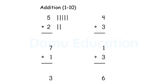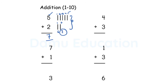For five plus two, you draw lines to represent each number. For five, draw five lines: one, two, three, four, five. For two, draw two more lines. Now count all the lines together: one, two, three, four, five, six, seven. So the final answer is seven.